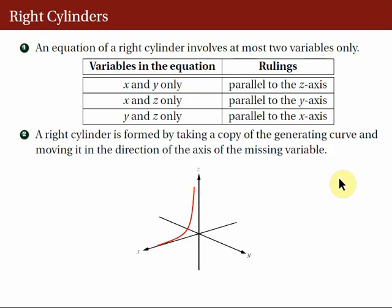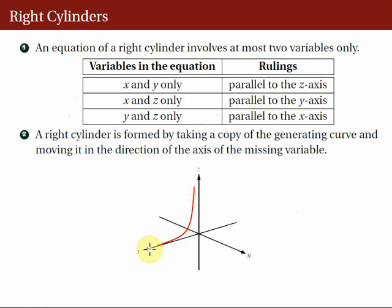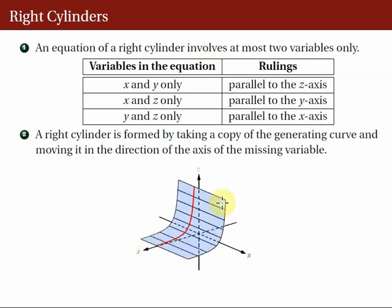A right cylinder is formed by taking a copy of the generating curve or the directrix and moving it in the direction of the axis of the missing variable. In this picture, we have the directrix on the xz plane. We are under the second case where the variables in the equation are x and z only, so the graph of this equation should be a right cylinder whose rulings are parallel to the y-axis. To form the graph of the cylinder, we translate this red curve along the axis of the missing variable, which is the y-axis, and then draw the rulings parallel to the y-axis.